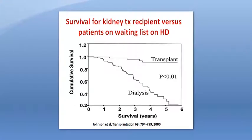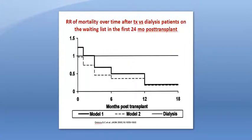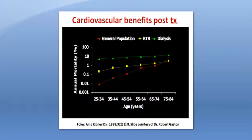It was shown clearly that receiving a kidney improves survival compared to staying on dialysis on the transplant waiting list. When corrected in Model 1 for age, gender, primary renal disease, social deprivation, and time since waiting listing, there is a significantly lower relative risk of mortality two years after transplantation versus dialysis patients on the waiting list. And even when corrected for other comorbidities, survival is still better when receiving a kidney, as shown in Model 2. There is a clear reduction in cardiovascular mortality in transplant patients compared to staying on dialysis, though it is still worse than the general population.